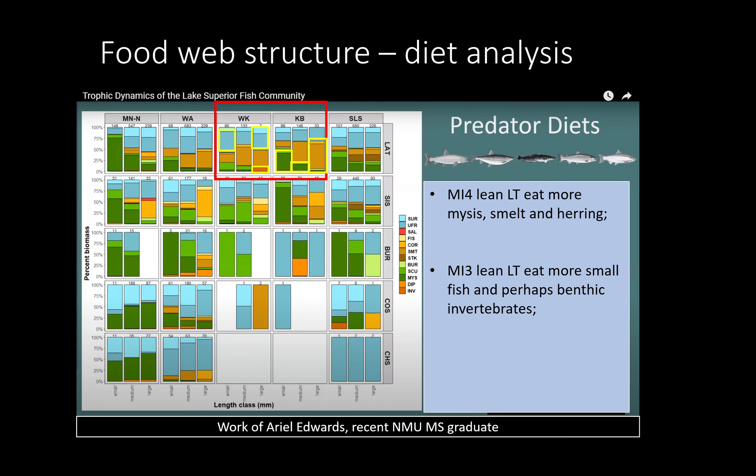For diet analysis, we turn to the recent study of the CSMI data done by Ariel Edwards for her master's thesis. She does show differences in lean lake trout diets on the two sides of the peninsula. In MI4, lean lake trout appear to eat more mysis, more smelt and herring, while in MI3 they appear to eat more small fish that are so well digested they can't be identified, as well as more benthic invertebrates.